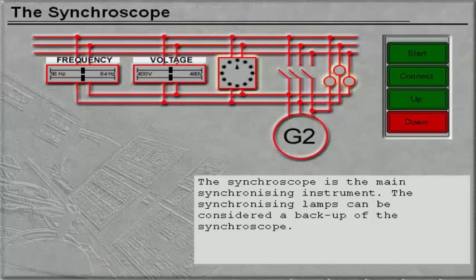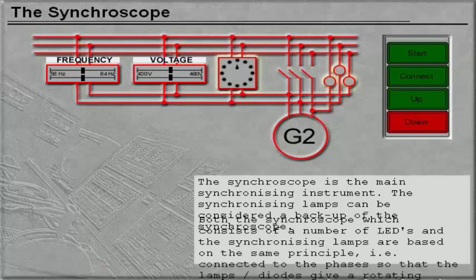The synchronizing lamps can be considered to be a backup for the synchroscope. Both the synchroscope, which consists of a number of LEDs, and the synchronizing lamps are based on the same principle.